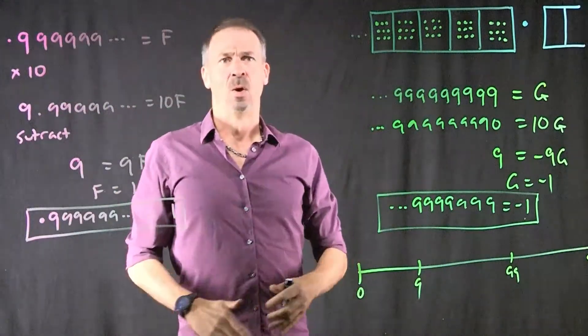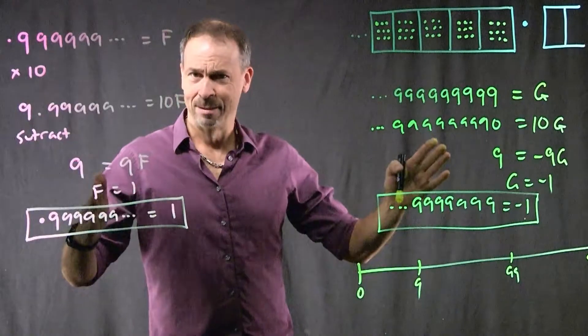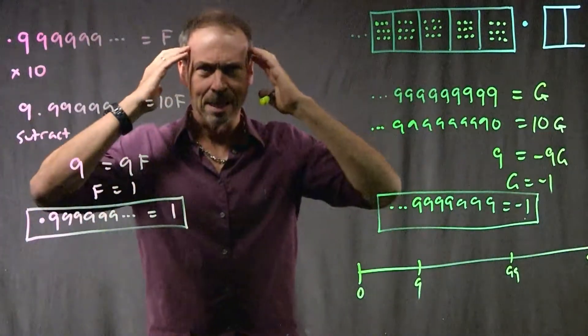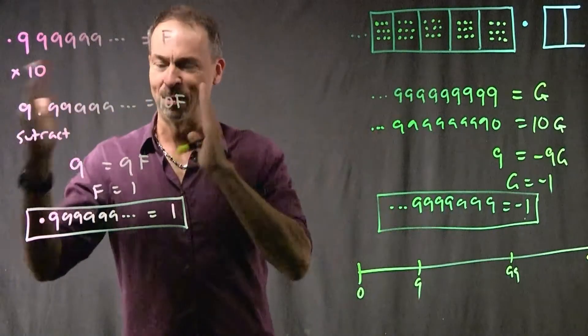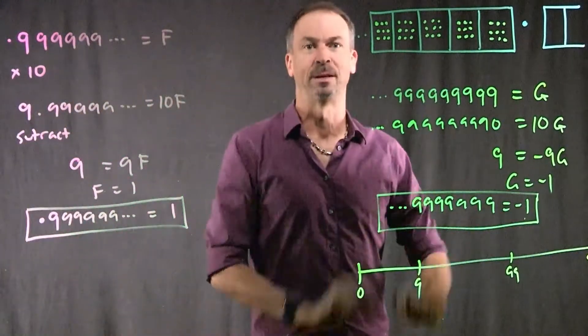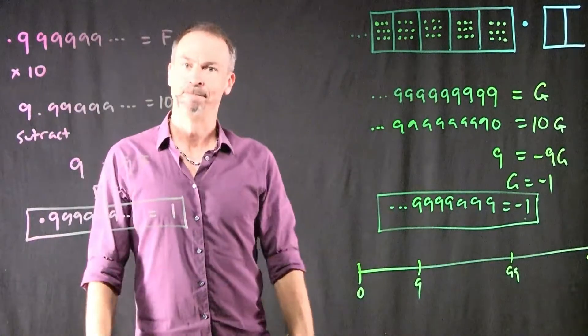So I guess my point is, when can you believe the mathematics? Can you believe it in one spot and not the other? You have to be consistent here. Either believe the math, or don't believe the math. And if you believe the math, I have to say, 0.99 forever is 1, and I have to say, this one is negative 1. Crazy.